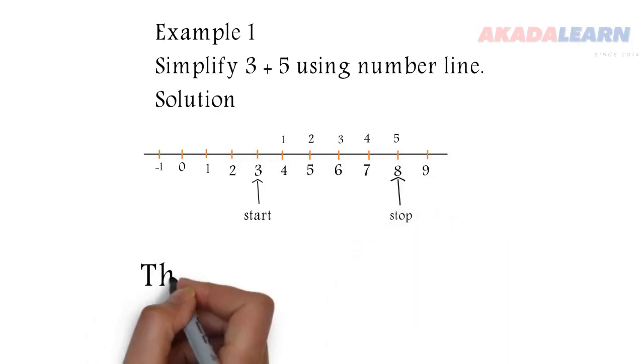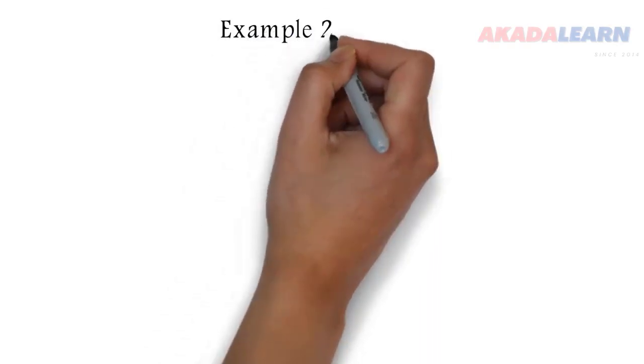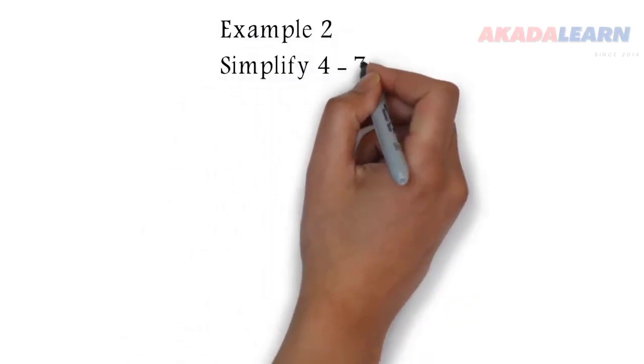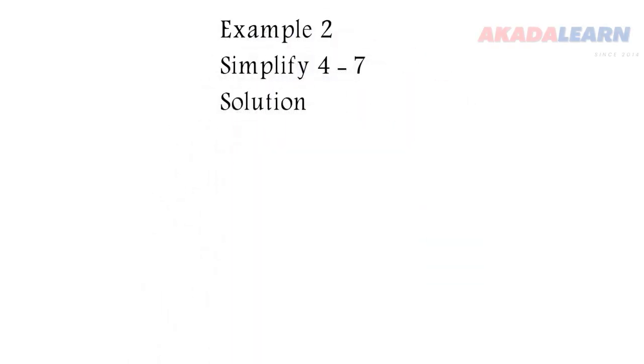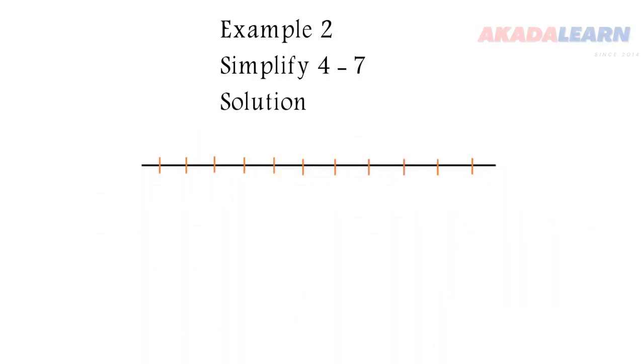Therefore, 3 plus 5 is 8. Let's see another example. Simplify 4 minus 7. We want to use number line to do that, so we draw a number line and we number the lines.